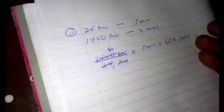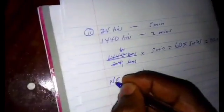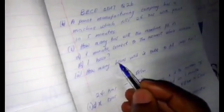So 60 times 5 minutes equals 300 minutes.